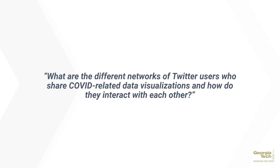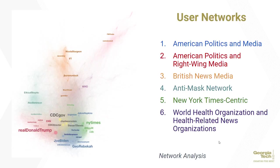What are the different networks of Twitter users who share COVID-related data visualizations, and how do they interact with each other? Looking into who is sharing these posts, the researchers were able to develop a user network with six main groups: the American Politics and Media Group, American Politics and Right-Wing Media, British News Media, the Anti-Mask Network, a New York Times-centric network, and the World Health Organization and Other Health Organizations network.